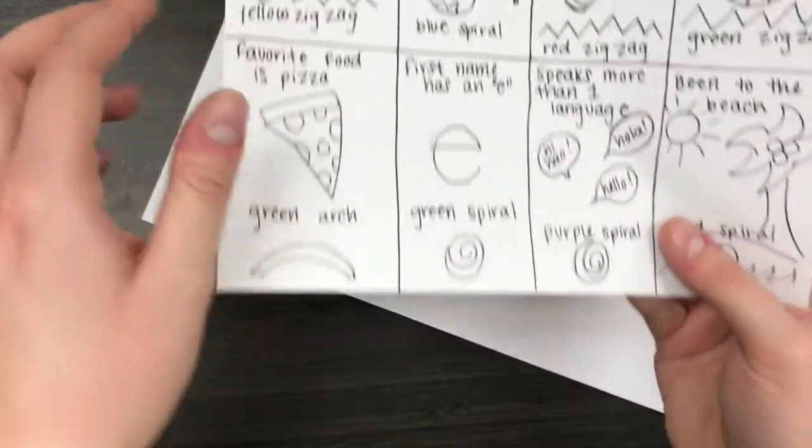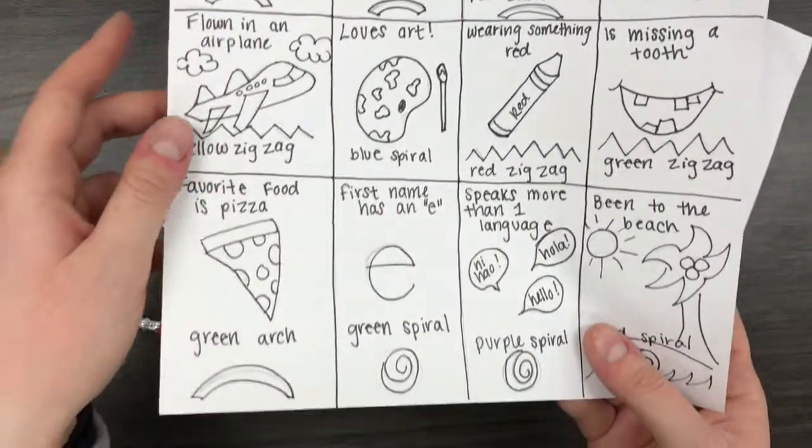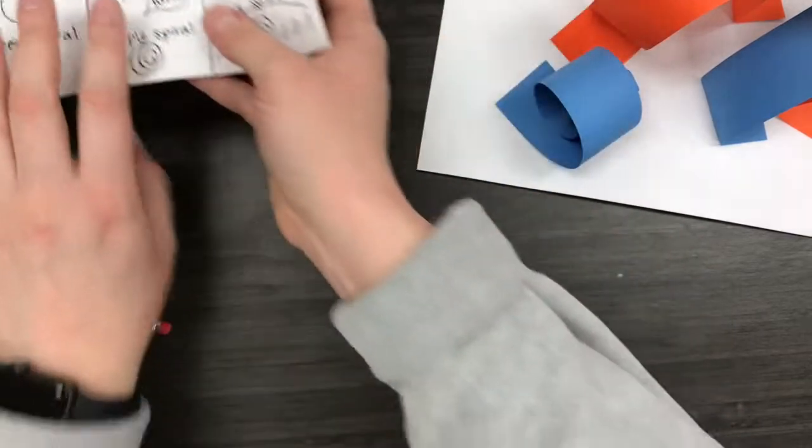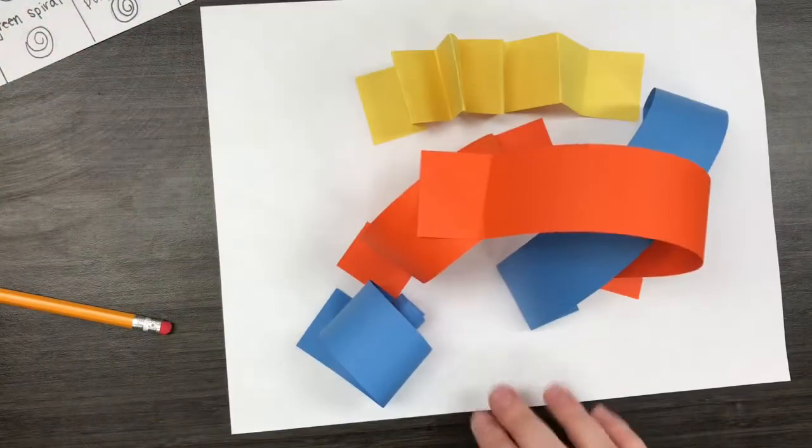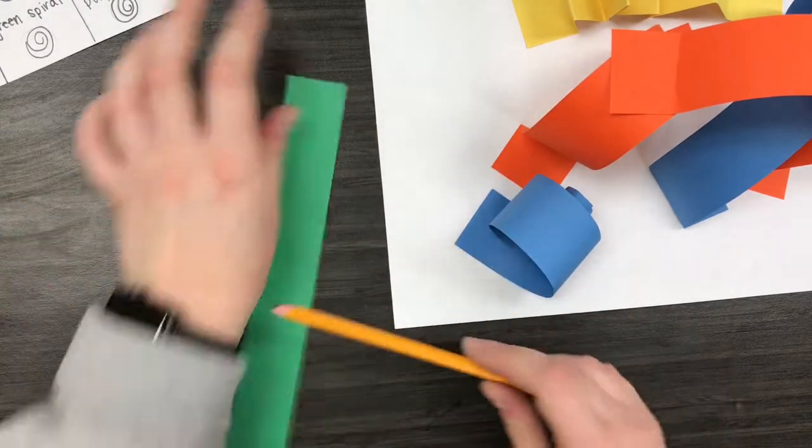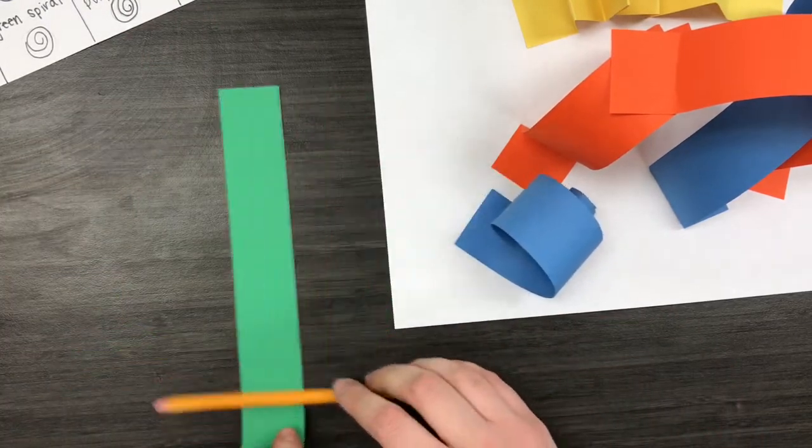Then for my fifth and final one, let's see, I'm going to pick this bottom one. My first name has an E in it. My first name is Sophie, it has an E, so I'm going to make a green spiral. Remember, you need at least five different things.